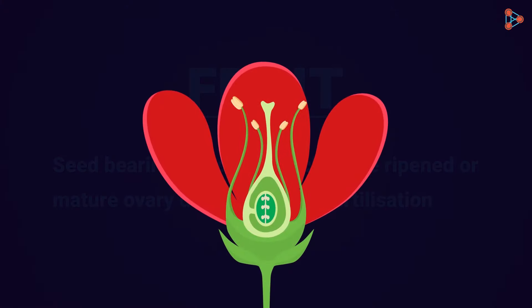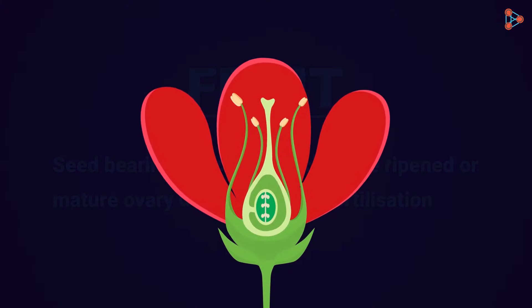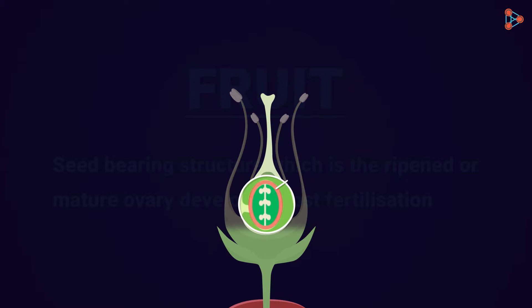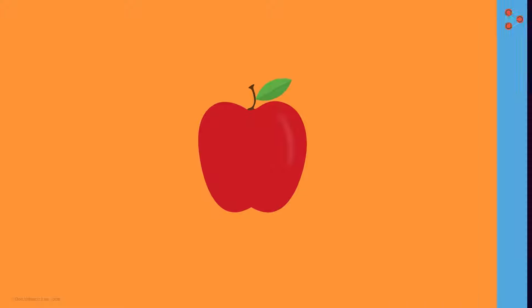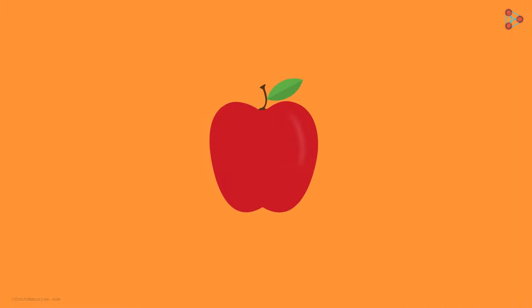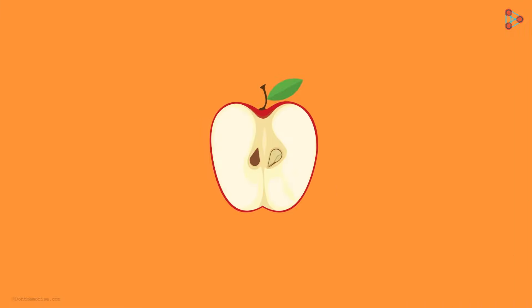In a typical flower, after fertilization, the petals wear off. This part — that is the ovary — develops into a pulpy fruit, and these ovules develop into seeds. This is how a typical fruit appears to us, and this is how it looks when cut.